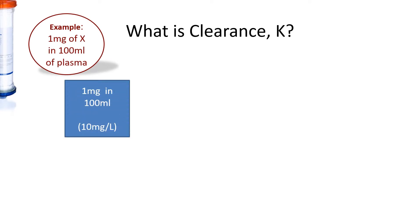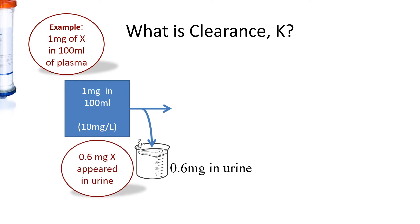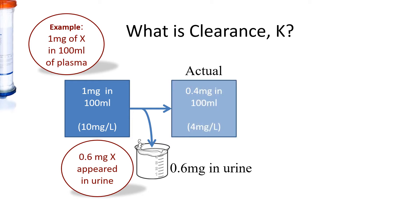This is an illustration of clearance. For example, if we put 1 mg of substance X in 100 mLs of plasma, this will give us a concentration of 10 mg per litre. And let's say 0.6 mg appears in the urine. In actual fact, the patient would have 0.4 mg left in 100 mLs, and that would be 4 mg per litre.